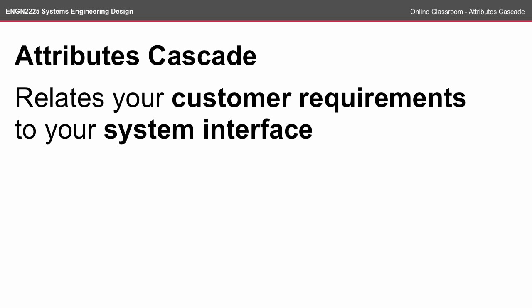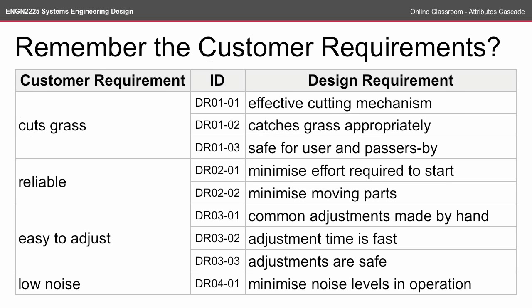The attributes cascade relates your customer requirements to your subsystems and system interface. This is a really important part of the process because it begins to connect what your customer is after to your system design.